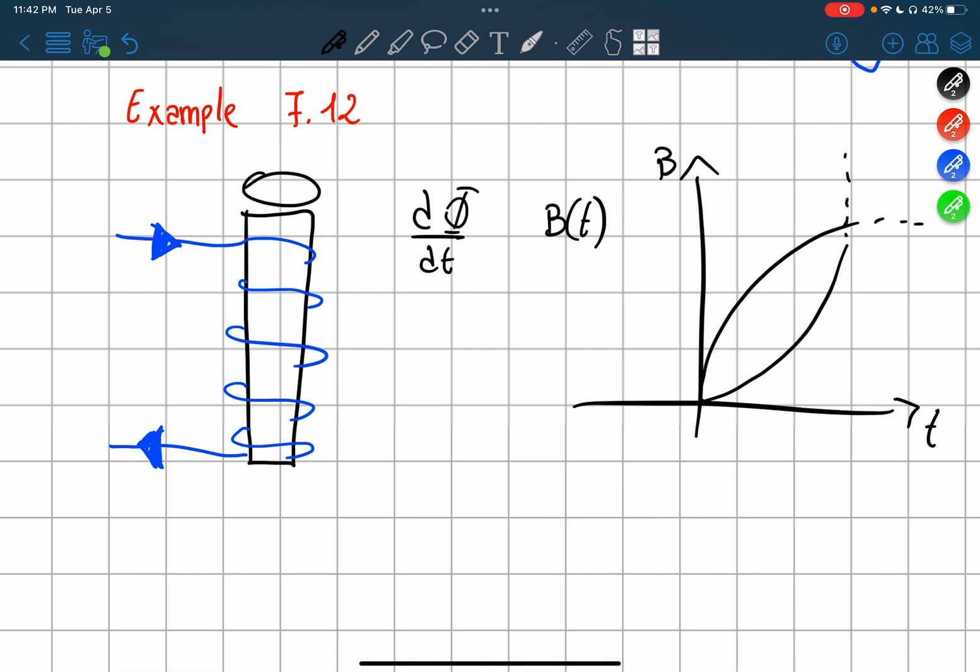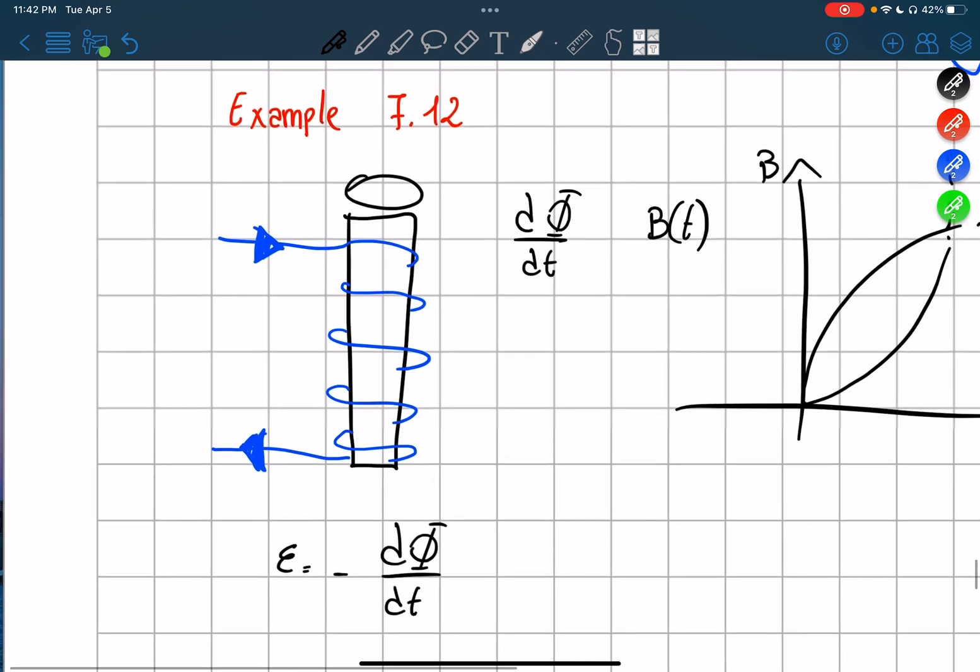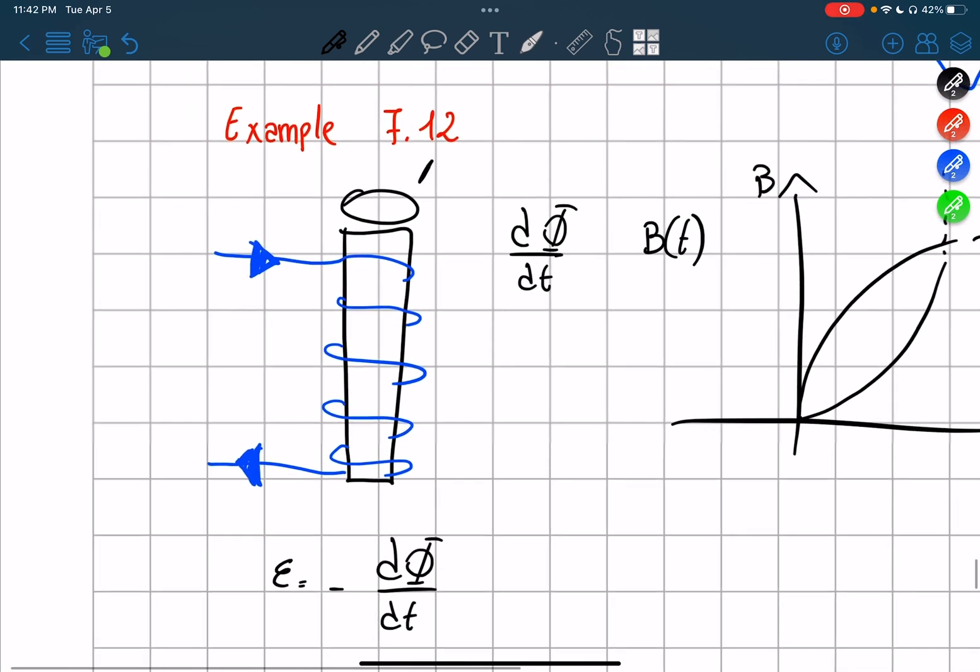So once we have a change in flux, of course we know we're going to have an opposite EMF induced inside the ring that we have here on top. Now since we know it's in the opposite direction, that means it's going to go this direction.